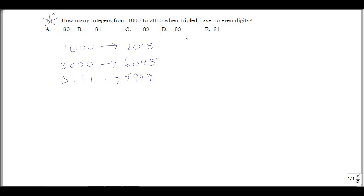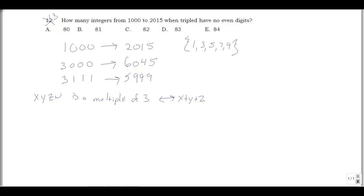With no even digits, my available digits are 1, 3, 5, 7, and 9 — all odd. Now, for the multiple of 3 condition, I'll use the digit-sum trick. If I write a four-digit number as x, y, z, w — where x is the thousands place, y hundreds, z tens, w ones — then this number is a multiple of 3 if and only if x plus y plus z plus w is a multiple of 3.